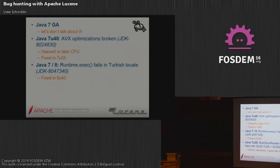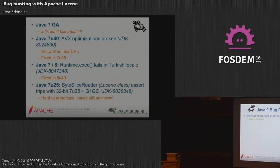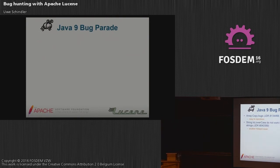We also found smaller bugs through locale randomization: Runtime.exec() didn't work in the Turkish locale because of a String.toUpperCase() call using the default locale — in Turkish, the letter 'i' behaves differently, which broke the ProcessBuilder class initializer. Fixed in Java 8. There's also another bug not yet fixed — an assert with trips since 7 Update 25, cause still unknown. For Java 9 we found array copy bugs due to improvements in that area, easy to reproduce but only found through random testing. A String.toLowerCase() issue with concatenated strings was another HotSpot bug.